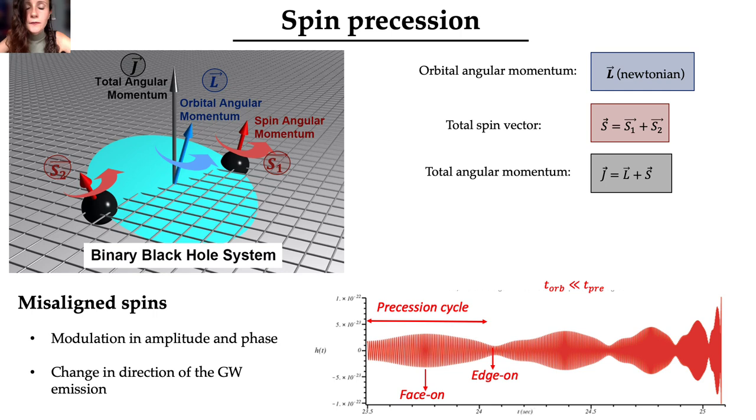Spin precession is an effect predicted by general relativity that is caused by the misalignment of the two individual black hole spins, S1 and S2, with respect to the orbital angular momentum L. Relativistic spin-spin and spin-orbit couplings will cause the orbital plane and the spins to precess about the direction of the total angular momentum J. While most of the gravitational emission is beamed along the direction of L, this direction will change in time, causing this characteristic modulation on both the amplitude and the phase of the gravitational wave.